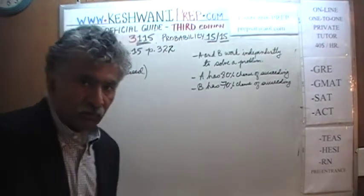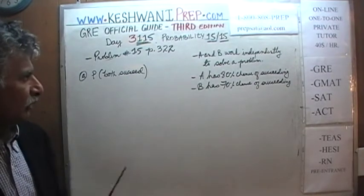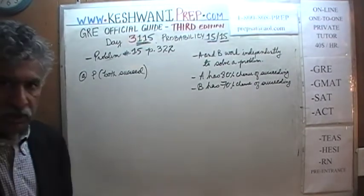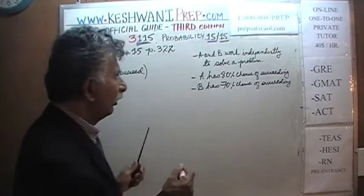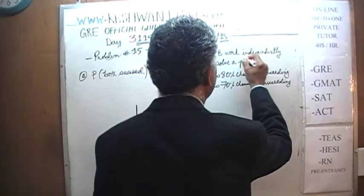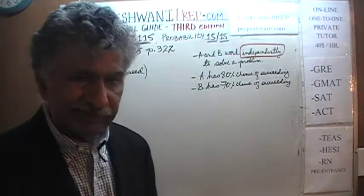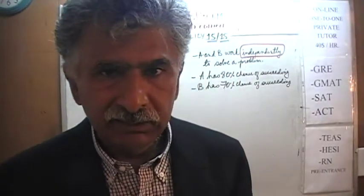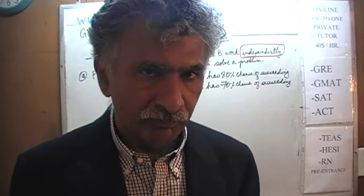I put the problem on the blackboard. Read it yourself because I do not put down the whole problem verbatim. It says that we have two individuals A and B and they are working to solve a certain problem. And we are told that they are working independently. In other words, the odds of A succeeding or failing has absolutely nothing to do with how B performs and vice versa.